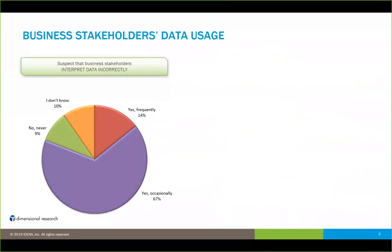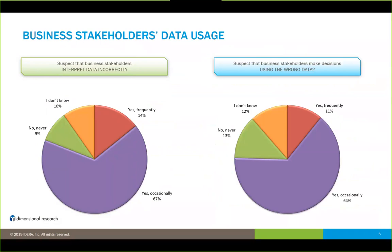Let's look at a survey commissioned by Dimensional Research. This looks at how business stakeholders are using information in their organizations. The question was: do you suspect that business stakeholders are interpreting data incorrectly? At least 67% said it was happening at least occasionally; only 9% were confident it never occurred; 10% unknown; and 14% said it occurred frequently. Even more dangerous: how many suspected business stakeholders were making decisions using the wrong data? Results were remarkably consistent — at 13% saying it never happens, that still leaves an 87% chance people were making decisions using the wrong data. That's extremely dangerous.